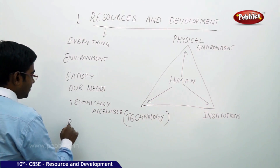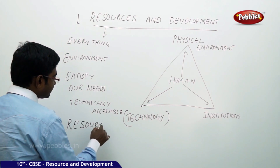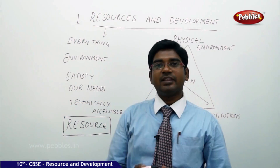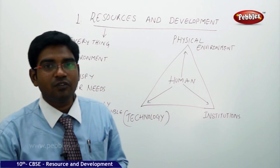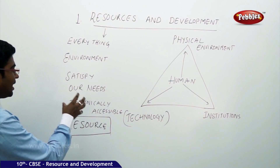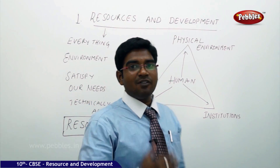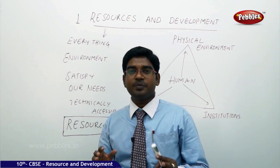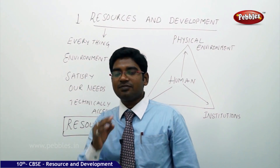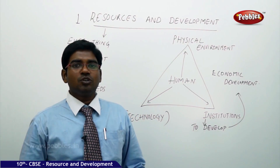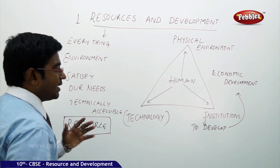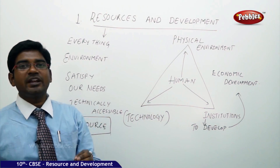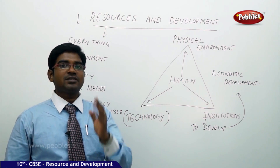A resource can be broadly categorized as anything available in nature which can be used to satisfy the needs of human beings. We also have requirements and accessibility in the technical sector, known as resources. That should also be at an affordable cost. So everything available in nature at an affordable cost to satisfy the needs of human beings is known as a resource.